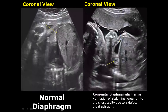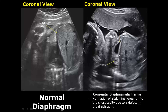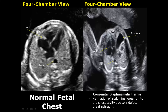A fetal diaphragm appears as a hypoechoic structure between the thoracic and abdominal cavities. In the coronal view, we see the lungs and the heart above the diaphragm. In a congenital diaphragmatic hernia, there is a defect in the diaphragm leading to herniation of abdominal contents — such as the stomach — into the thorax. The stomach appears as an anechoic cystic structure because it is fluid-filled. In the four-chamber view, we can see the stomach right next to the heart, and the heart is also displaced towards the right side.